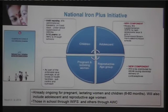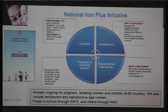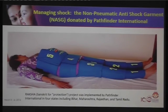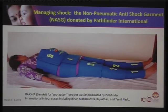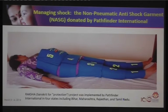The national program has moved from RMNCH to RMNCH+A — Reproductive, Maternal, Newborn, Child Health plus Adolescent — covering the whole continuum of care, including adolescents and women receiving contraception. A study by Pathfinder International in four Indian states found NASG being used where donated; the government is still considering how to scale its use in the program.